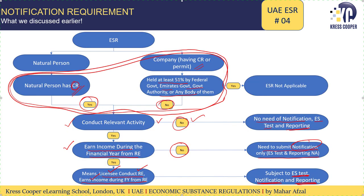In our previous lectures we established that a licensee conducting a relevant activity is subject to notification. A clarification from the Frequently Asked Questions: even a company held at least 51% by the federal government, emirates government, or government authority is also subject to the notification requirement, subject to the condition that the company is conducting a relevant activity. So in summary, any licensee is subject to notification if the licensee is conducting a relevant activity.